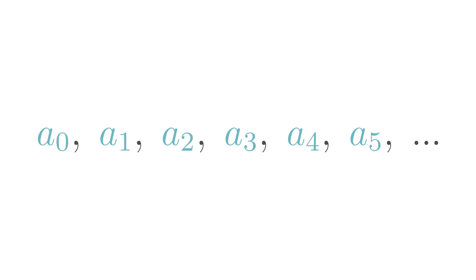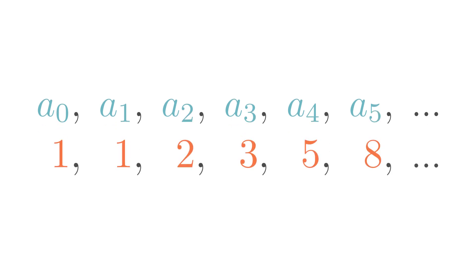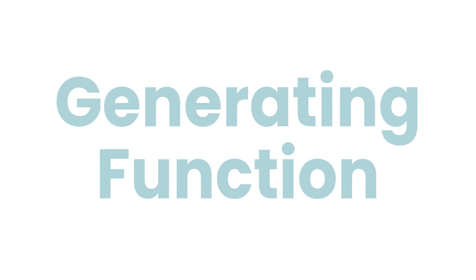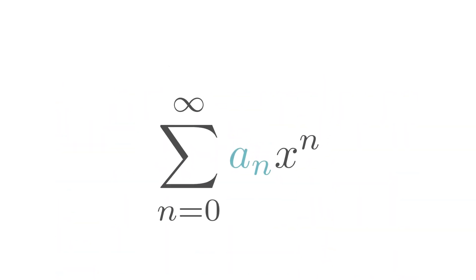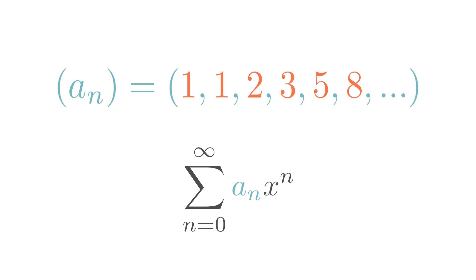When we have a sequence of numbers, in this case Fibonacci ones, we can compute something called the generating function of a sequence. It is exactly a power series where the next numbers of our sequence are coefficients of this series.